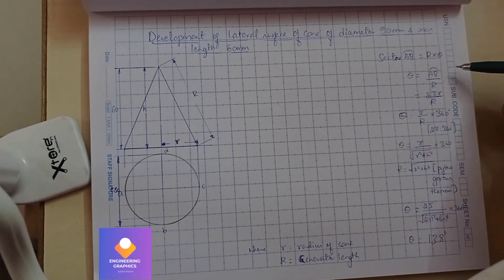Sector AB equals capital R times theta. So theta equals sector AB divided by capital R. We'll consider sector AB length as 2πr, and 2π equals 360 degrees. We know π equals 180.